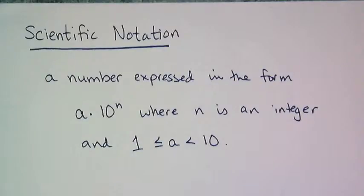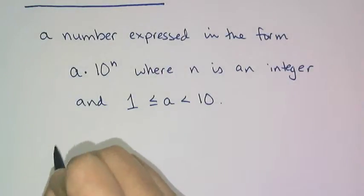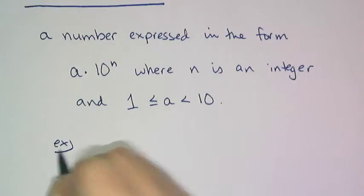Scientific notation is used for super huge and super tiny numbers where you want the place value of the numbers to be separated from the numbers you multiply, like the significant digits. It's exclusively used in science because that's where you get the super huge and super tiny numbers.